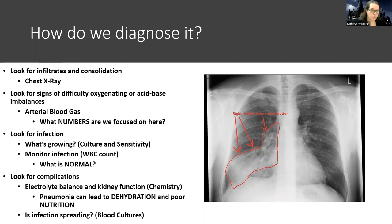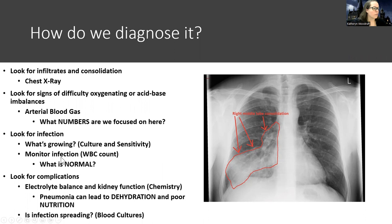Since this is also an infection, we want to get a sputum culture, because a culture is the most specific way to know what's growing. We need to know: is it a virus or a bacteria? Because we can give antibiotics all day, but if it's viral pneumonia, they won't be effective. A culture tells us what's growing; a sensitivity tells us what antibiotics or treatment will be most effective. We also monitor for infection in general with a white blood cell count.